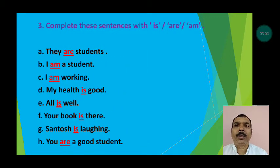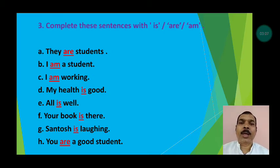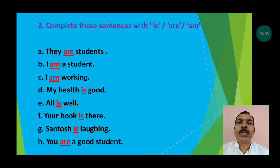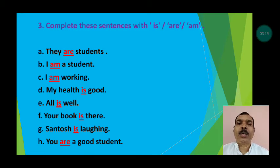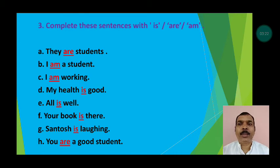Number 3: Complete these sentences with 'is', 'are', or 'am'. A: 'They dash students' — answer: 'are'. 'They are students.' 'I dash a student' — answer: 'am'. 'I am a student.'